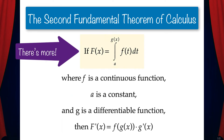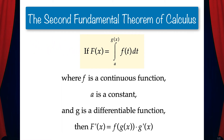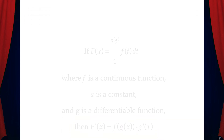And this brings us to another part of the second fundamental theorem of calculus. If capital F of x is the integral from a to g of x of little f of t dt, where f is a continuous function, a is a constant, and g is a differentiable function, then capital F prime of x equals little f of g of x times g prime of x. We just need to replace t in the little f function with g of x and then multiply by g prime of x.